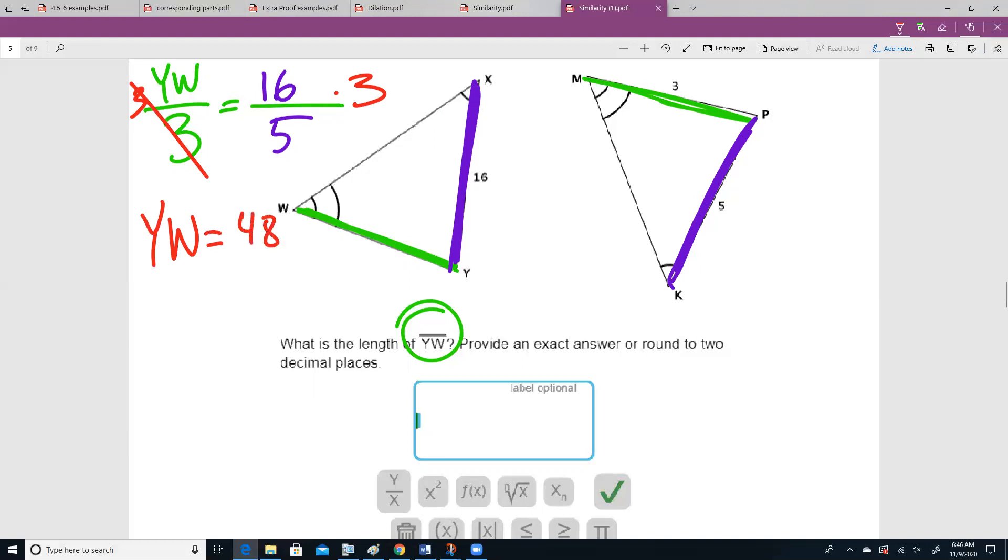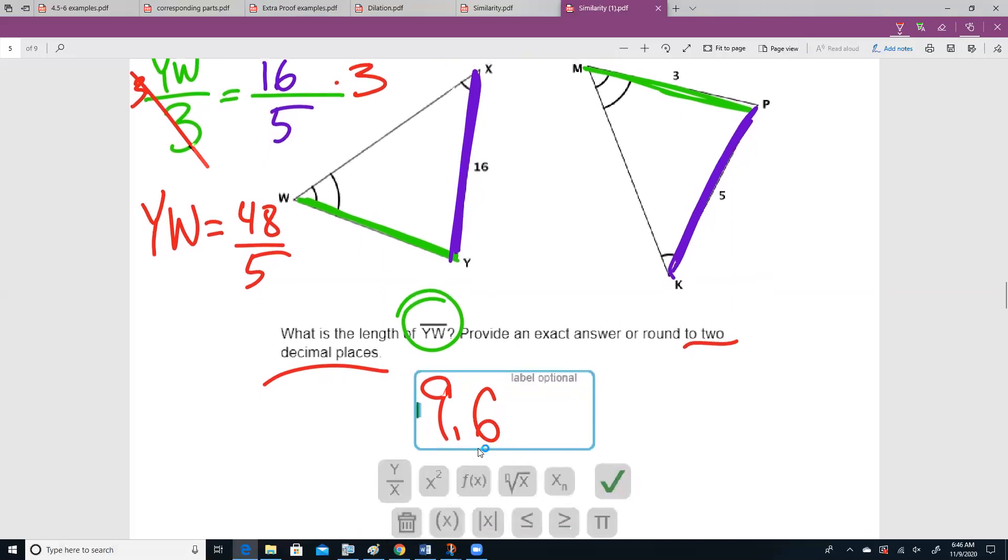48 over 5, it still wants it rounded to two decimal places. So I'm still going to plug that into my calculator. I'm going to get 9.6. Notice 9.6 terminates, meaning that the decimal ends. So I don't actually have to do any rounding, because I have less than two decimal places anyways.